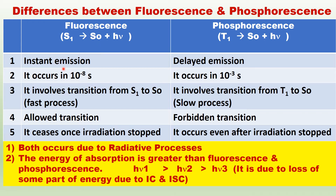In the case of fluorescence, it occurs immediately — it is called instant emission. Phosphorescence, on the other hand, is delayed emission. Fluorescence occurs in about 10 to the power of minus 8 seconds, while phosphorescence occurs in about 10 to the power of minus 7 seconds.